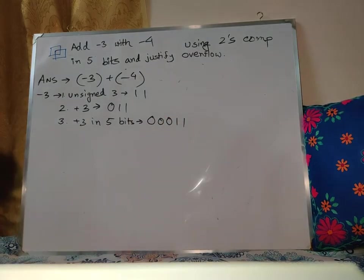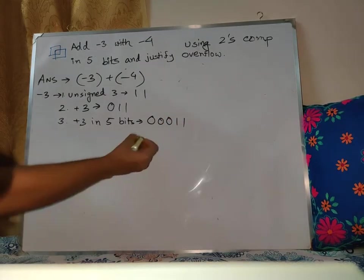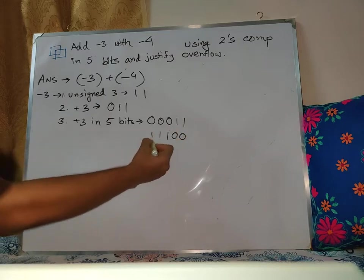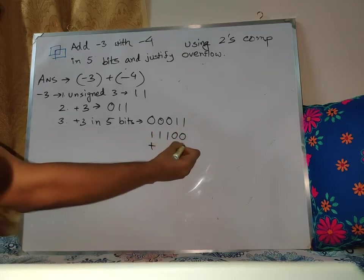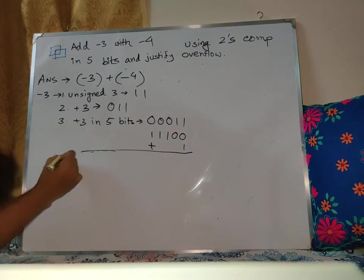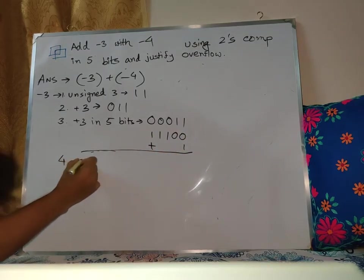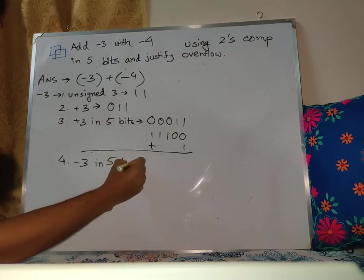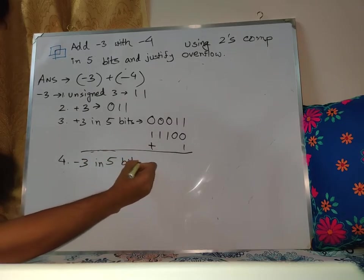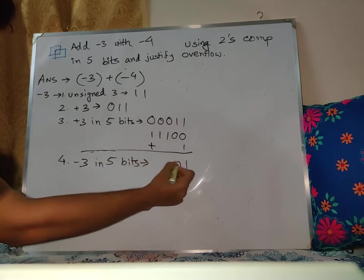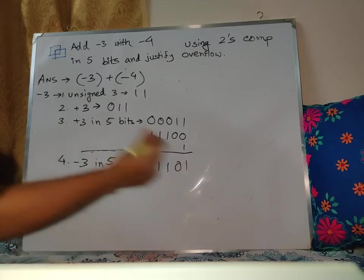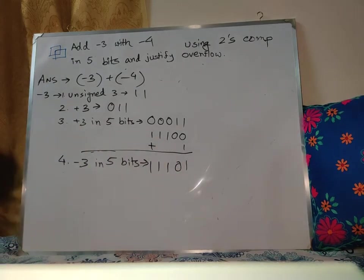So I'm going to show you minus 3 in 5 bits. For that, I'm going to use 2's complement. So minus 3 in 5 bits is 1, 1, 1, 0, 1.